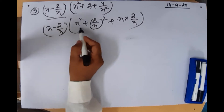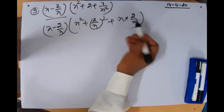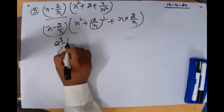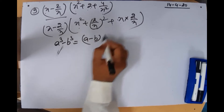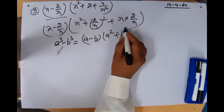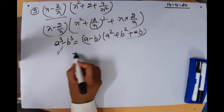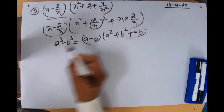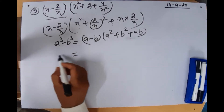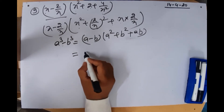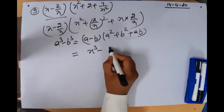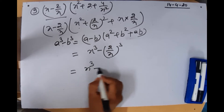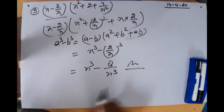This whole expression (a − b)(a² + b² + ab) equals a³ − b³. Applying this identity: a³ − b³ = x³ − (2/x)³ = x³ − 8/x³. This is our final answer.